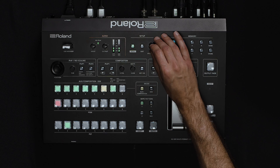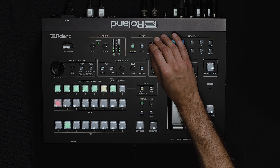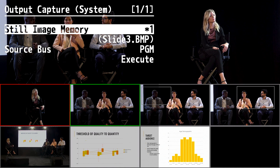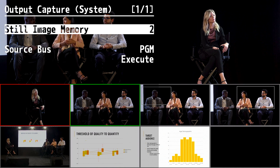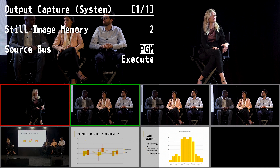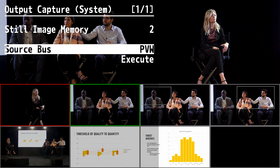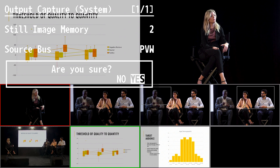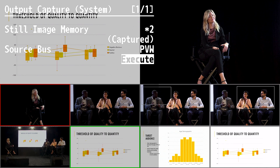Another way to import still images is to use the output capture function. Press the menu button, go into the system menu, and on page two select output capture. Choose the still image memory slot you want to save the capture to, as well as the source bus you want to take the image from. In this case, I'm going to set it to preview and put the presentation in preview. Once you execute, you'll have the still image in slot number two.